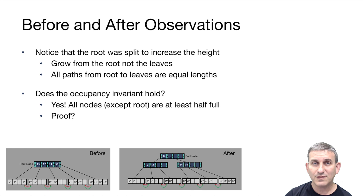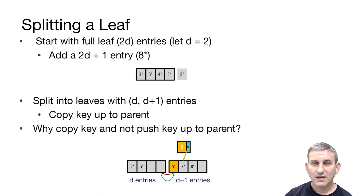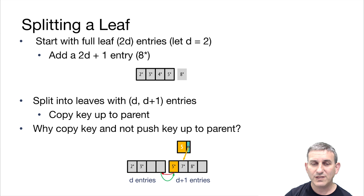Let's look a little more closely just to review at how we split a leaf node. We start with a full leaf node — it's got two D entries, and in our little pictures here, D is going to equal two. We're going to add a 2D plus one entry, eight star. Then we're going to split that into leaves with D and D plus one entries, copying the key up to a new parent index entry. We copy the key up because in B+ trees, all the data entries remain in the leaves at all times. So five star has to remain in the leaf level, but the value of five is also going to be in an index entry above for routing searches — so we copy that five up.